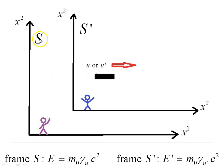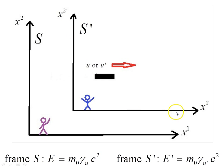Let's say we have two frames. We have frame S, and the purple observer in frame S, at rest in frame S, sees a black object moving by with speed u along its x-axis. We have a second frame S prime, moving parallel, with both x-axes parallel to each other. The blue observer sees the same object moving with speed u prime in the x₁ prime direction.